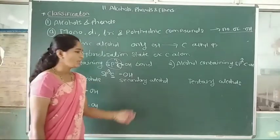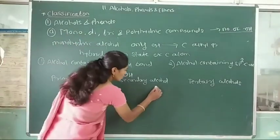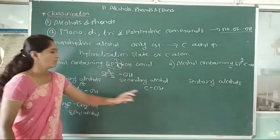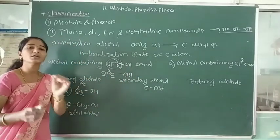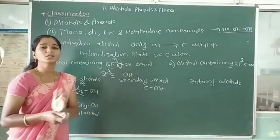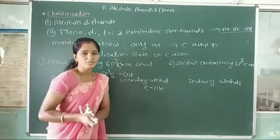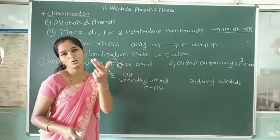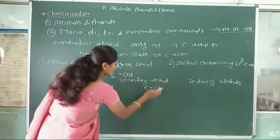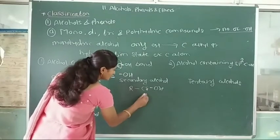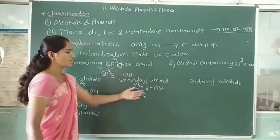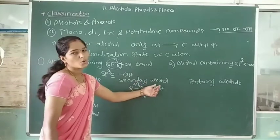In secondary alcohol, the OH-carrying carbon atom is a secondary carbon — meaning it is attached to two other alkyl groups. The OH group is attached to a secondary carbon atom, so this compound is called a secondary alcoholic compound.